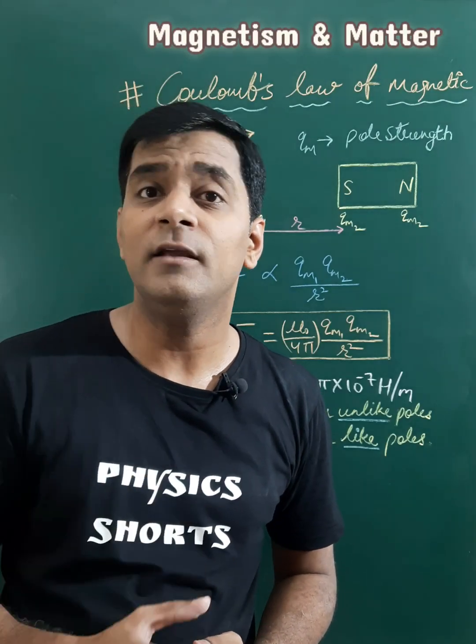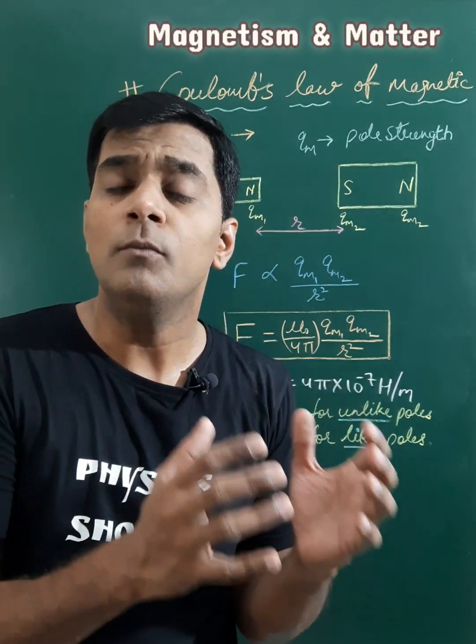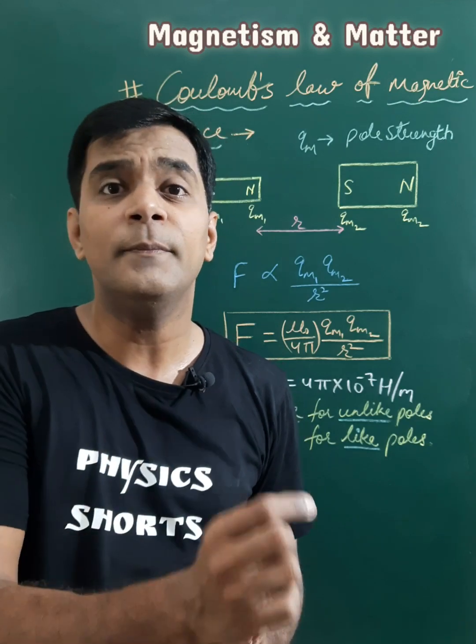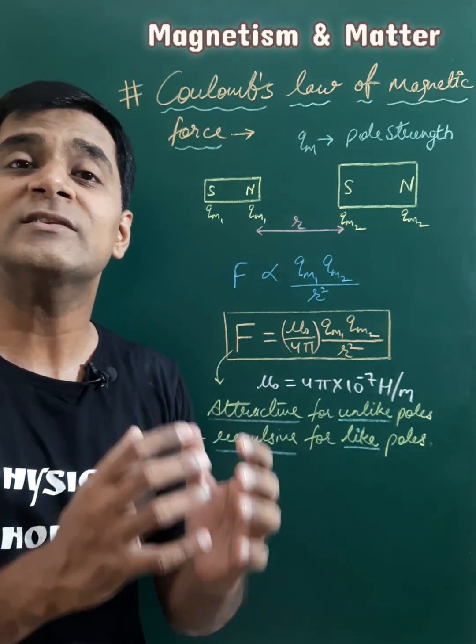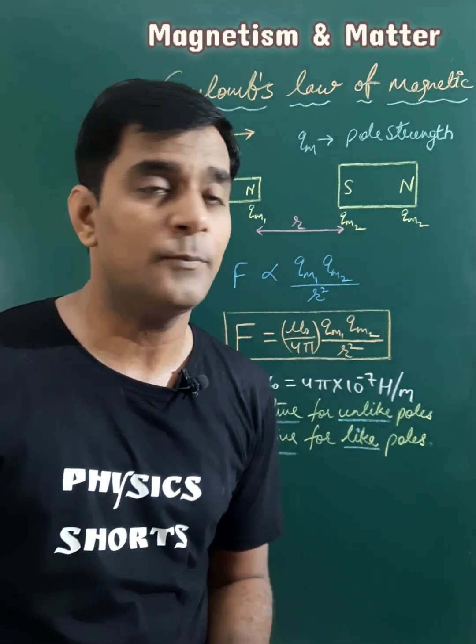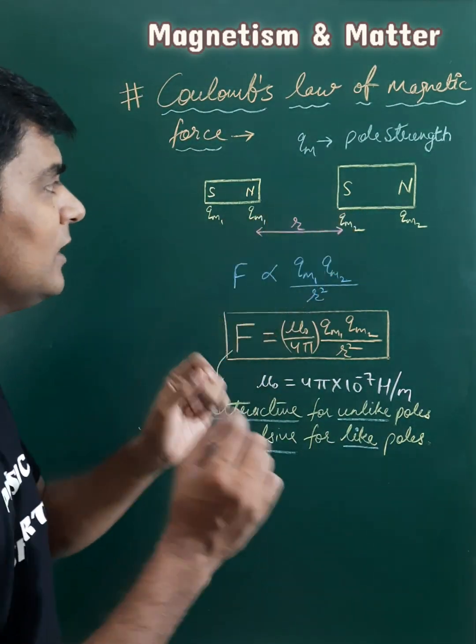According to Coulomb's law of magnetic field, the force between two magnetic poles is directly proportional to the pole strength and inversely proportional to the square of distance between the poles. Suppose we are taking two magnets and we are finding the force between these two poles.